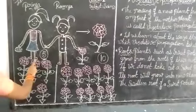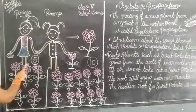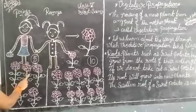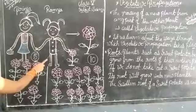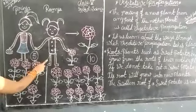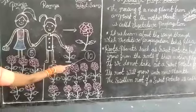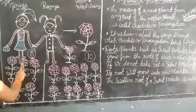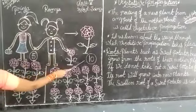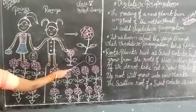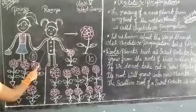Let's see what happened next. After some days there were 5 plants in Priya's garden, but in Ramya's garden there were 10 plants. At the same time Priya got 5 plants where Ramya got 10 plants. How is it possible? Let's find out.